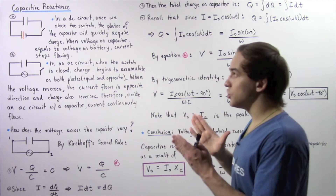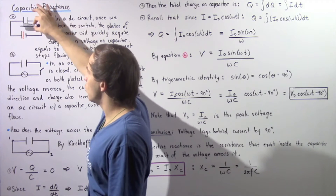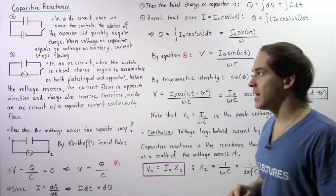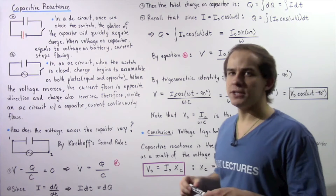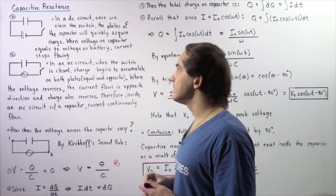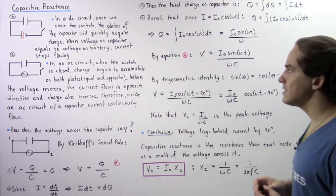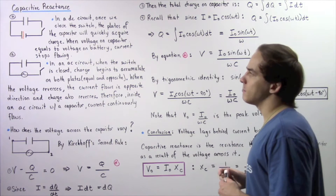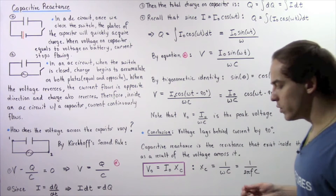That's because there is initially a voltage difference between the capacitor and our battery. As current flows, charge begins to accumulate on the plates of our parallel plate capacitor. Eventually, when the charge accumulates, the voltage difference across the capacitor will equal the voltage difference across the battery, and no more current will flow because there will be no voltage difference inside our DC circuit.